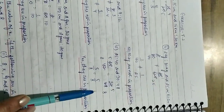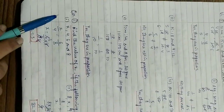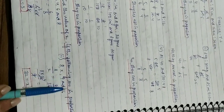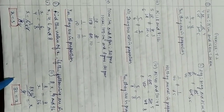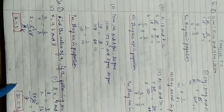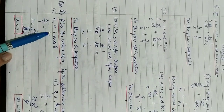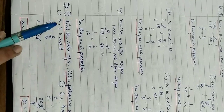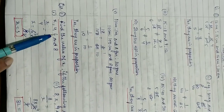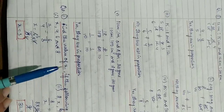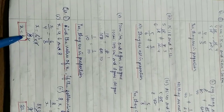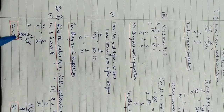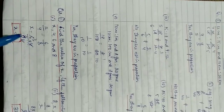Question number two: find the value of x if the following are in proportion. First part: x, 4, 6, 8. We write x by 4 equals 6 by 8. Cancelling 6 by 8, we get x equals 6 times 4 divided by 8, which gives x equals 3.